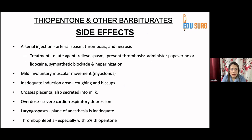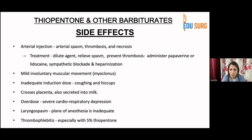Regarding side effects, arterial injection can cause arterial spasm, thrombosis, and necrosis. Treatment involves diluting the agent, relieving the spasm, and preventing thrombosis — you can give papaverine or IV lidocaine, sympathetic blockade, and heparinization.